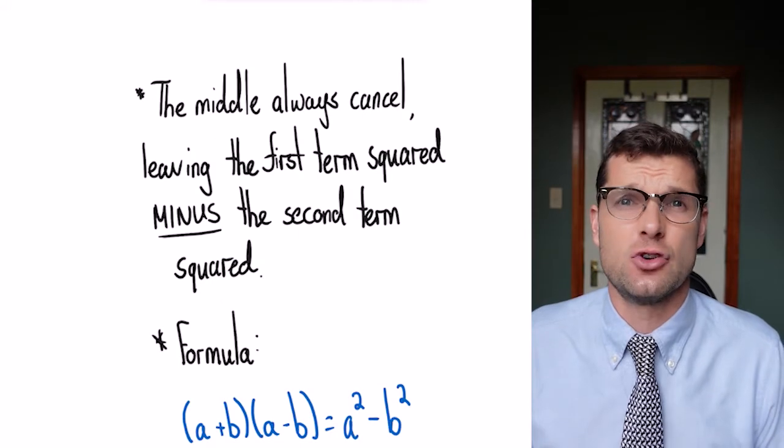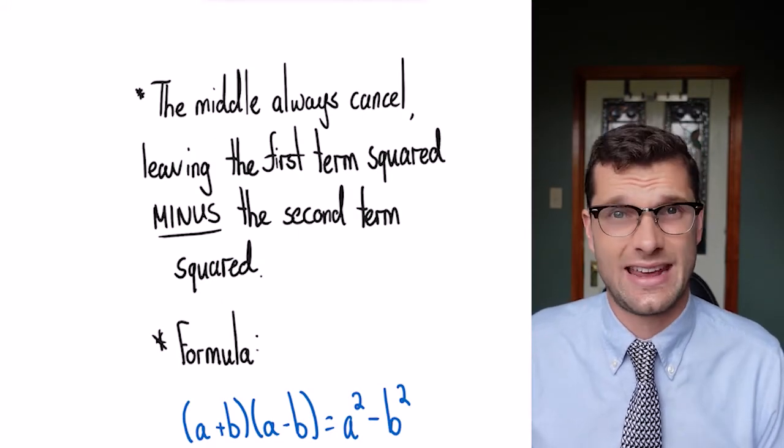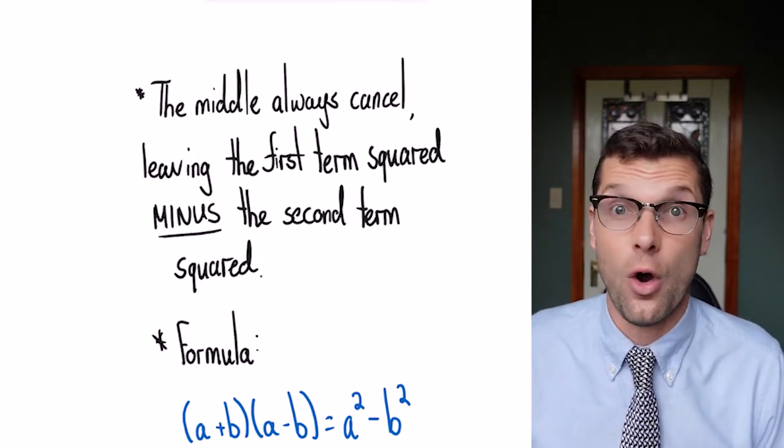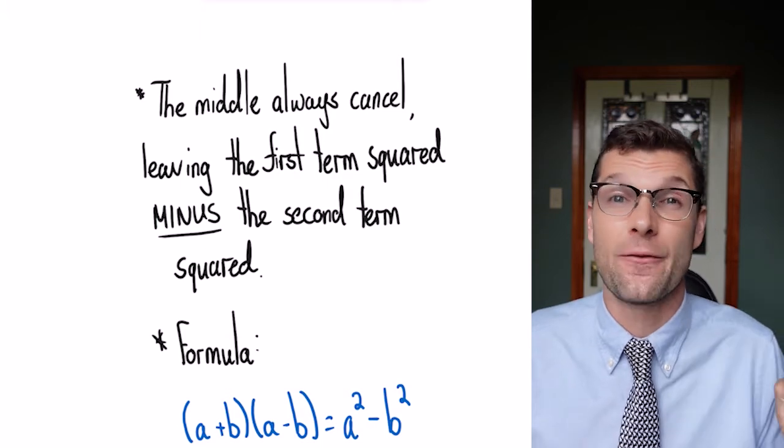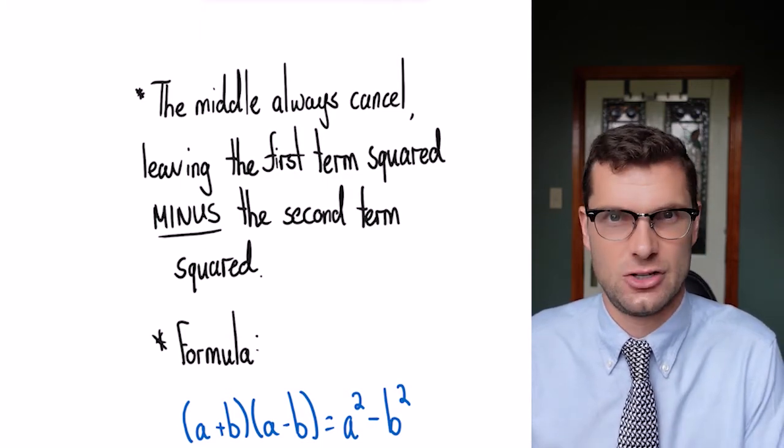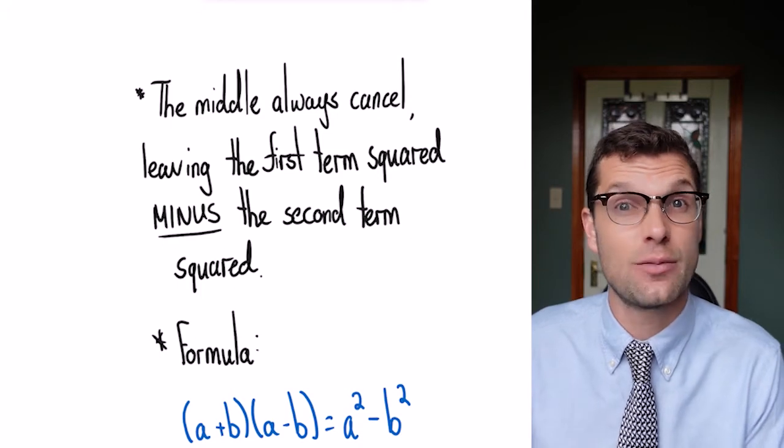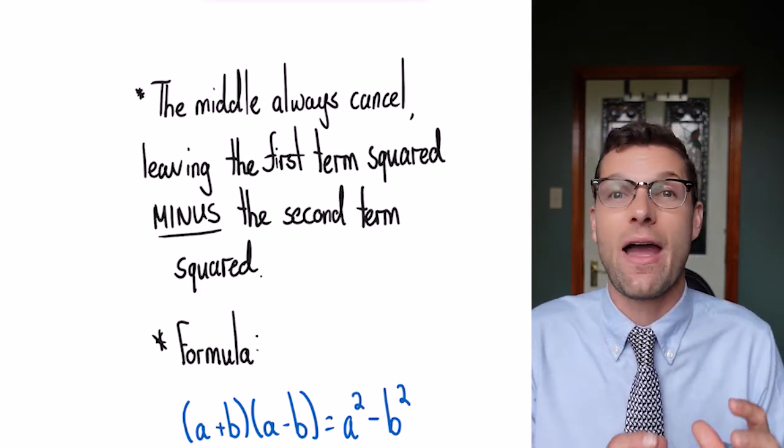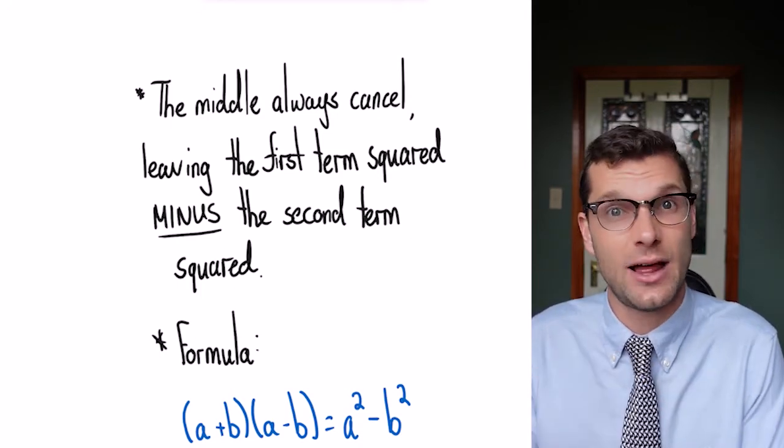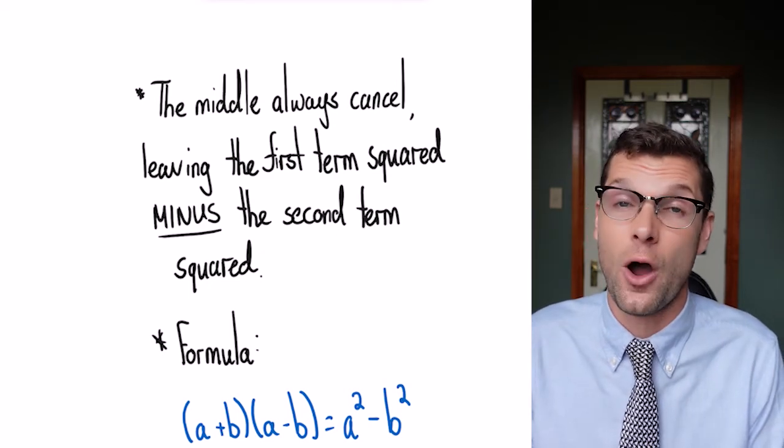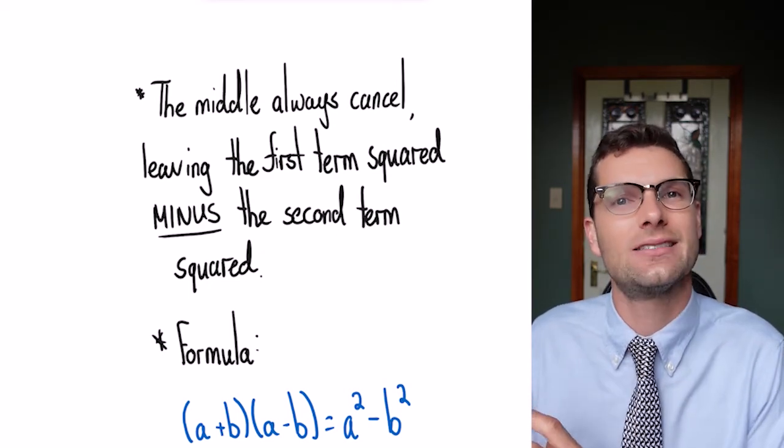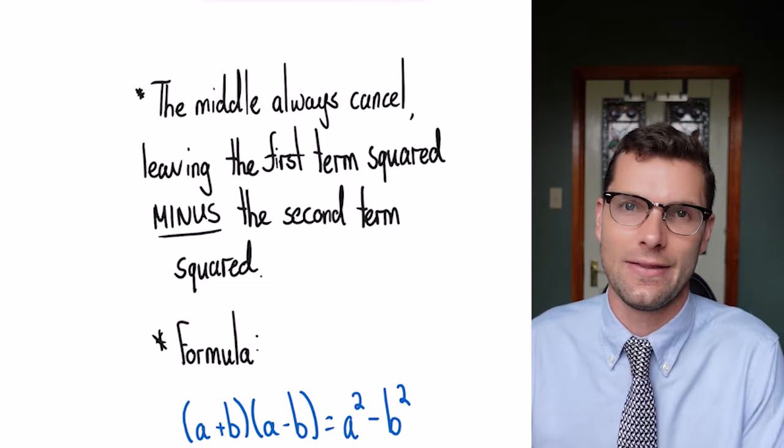When we have these difference of two squares, the middle two terms always cancel out, literally no matter what. So all we're left with is the first term squared minus the second term squared. That negative is really important because we're always going to have a minus and a plus. So we're always left with a negative number at the end.